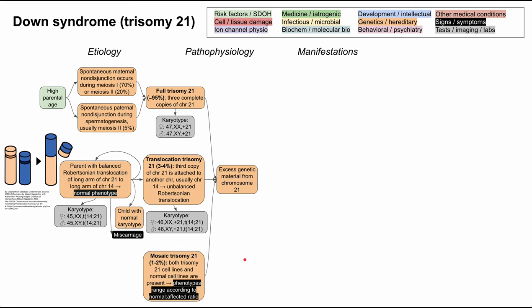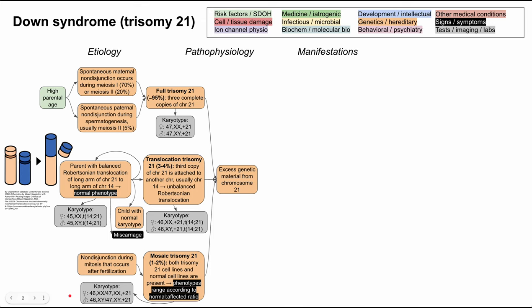Moving on to mosaic trisomy 21 — this is when a patient has both trisomy 21 cell lines and normal cell lines present throughout the body in a mosaic pattern. Phenotypes range according to which cells are affected and the normal-to-affected cell ratio. This happens from non-disjunction during mitosis after fertilization, whereas full trisomy 21 happens during meiosis. The karyotype depends on the cell: some cells will be normal 46XX or 46XY, while others will be 47XX or 47XY with an additional chromosome 21.